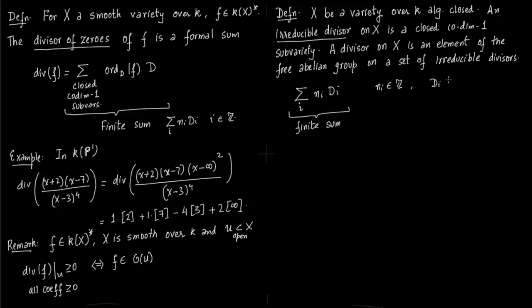So here this is a finite sum. We have talked about this before. N_i is an integer and D is the codimension-1 subvariety.